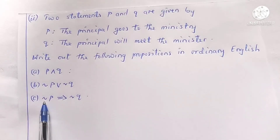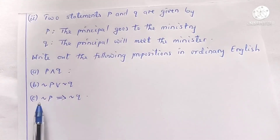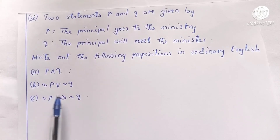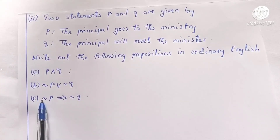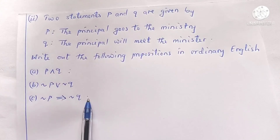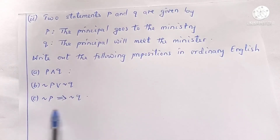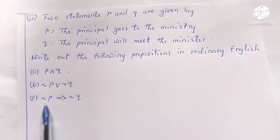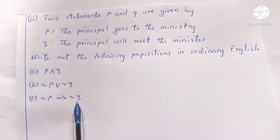The third proposition is an implication: not p implies not q, that is, the negation of p implies the negation of q. So this statement reads: 'if the principal does not go to the ministry, then the principal will not meet the minister.'